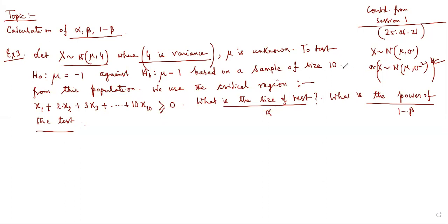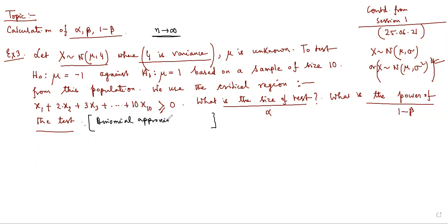Regarding the probability distribution: you might wonder what distribution applies here. Generally when n is large we use the normal distribution. Here n = 10, so this is actually the case of binomial approximation to normal — just noting this for background context.